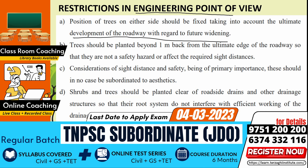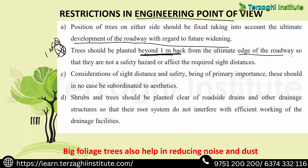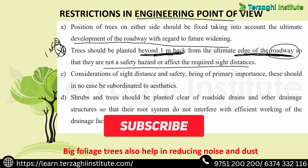Very important point — one MCQ question here. Trees should be planted beyond one meter back from the edge of the roadway. So trees are planted one meter back from the edge of the roadway, so that they are not a safety hazard or affect the required sight distance. We need to maintain that one meter setback from the edge of roadway to avoid obstructing sight distance.